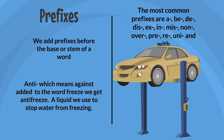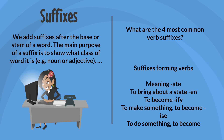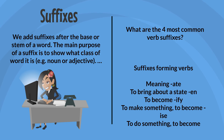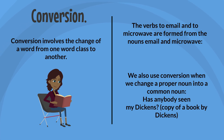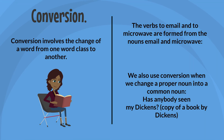We add suffixes after the base or stem of a word. The main purpose of a suffix is to show what class of word it is — e.g., noun or adjective. The four most common verb suffixes are: '-ate' (to bring about a state), '-en' (to become), '-ify' (to make something become), and '-ise/-ize' (to do something or become). Conversion involves the change of a word from one word class to another. For example, the verbs 'to email' and 'to microwave' are formed from the nouns 'email' and 'microwave.' We also use conversion when we change a proper noun into a common noun — e.g., 'a Dickens' meaning a copy of a book by Dickens.